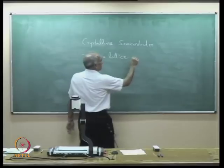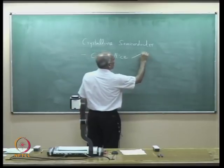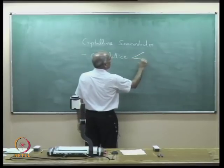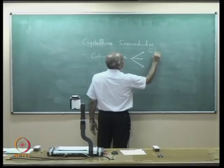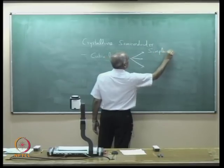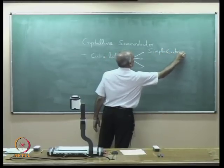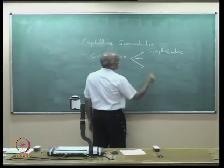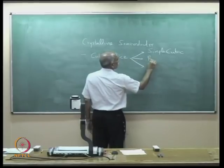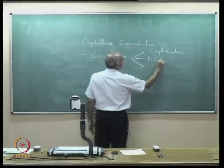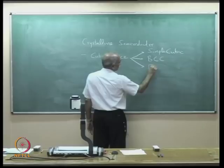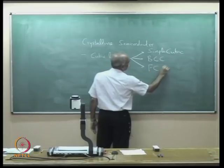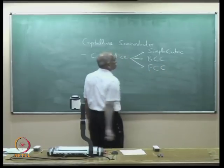They may have different structures like diamond structure or zinc blende structure, but most of them are characterized by a cubic lattice. In cubic lattice, there are simple cubic, body-centered cubic (BCC), and face-centered cubic (FCC).